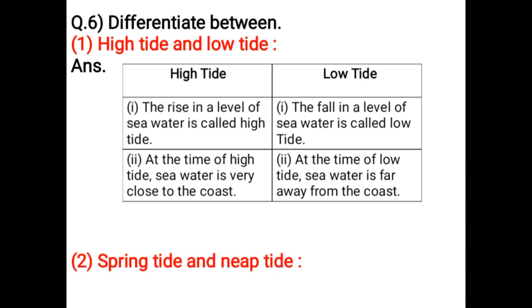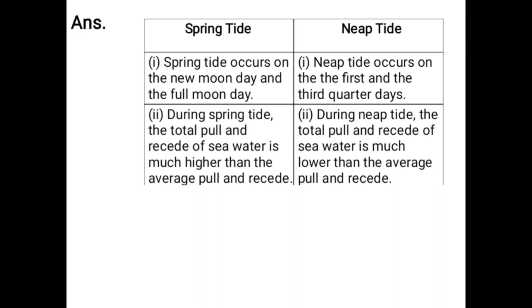Spring Tide occurs on the new moon day and the full moon day, while Neap Tide occurs on the first and third quarter days. During Spring Tide, the rise and fall of seawater is much higher than the average. During Neap Tide, the rise and fall of seawater is much lower than the average.